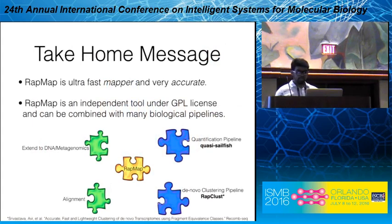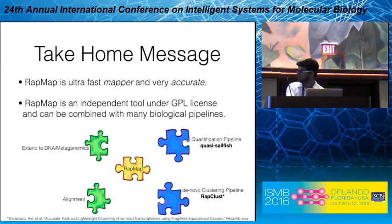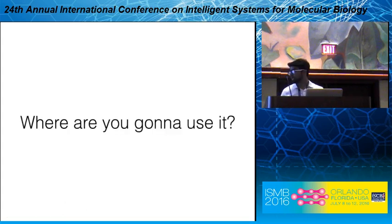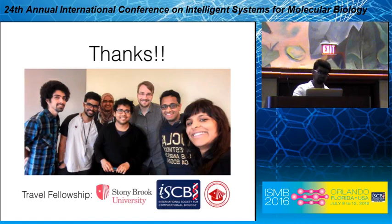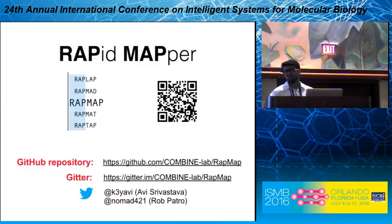I'd like to conclude by saying that RapMap is an ultra-fast, highly accurate tool available under the GPL license. We have retrofitted RapMap into two pipelines: quasi-Sailfish, which improves the accuracy of Sailfish, and RapClust, used for de novo clustering, which resulted in another paper available at bioRxiv. I started with the question 'what's in it for me?' and I'd like to end with a question: where are you going to use it? I'd like to thank my fellowship, Stony Brook University, and ISCB. We are available on GitHub, Gitter, and Twitter. I'm open to questions.